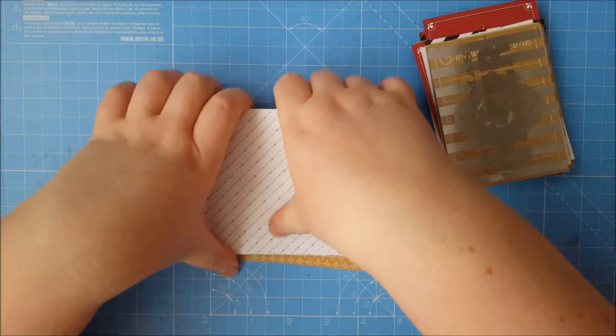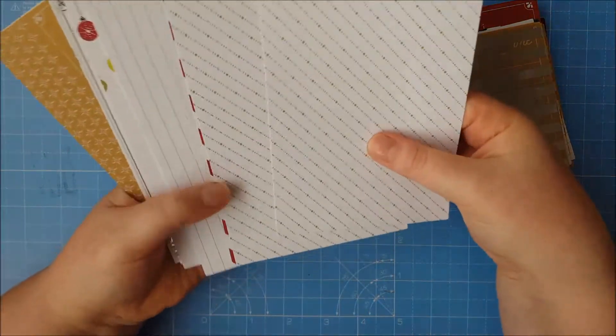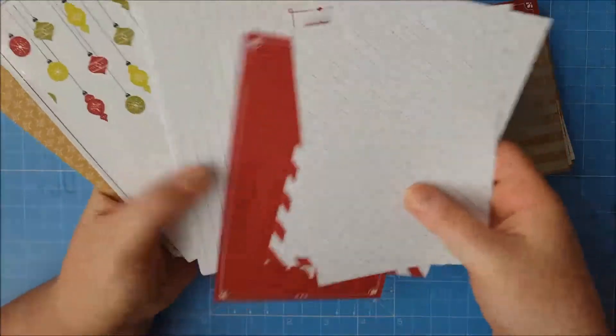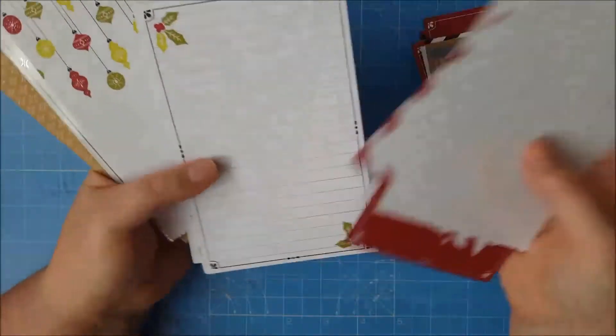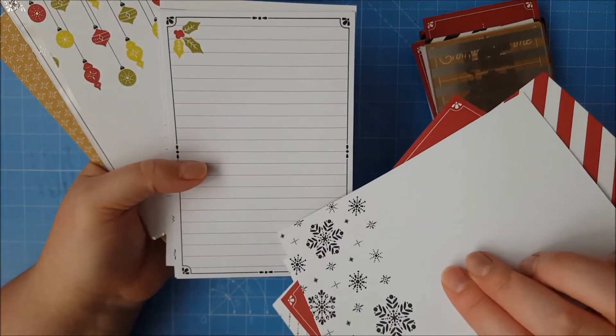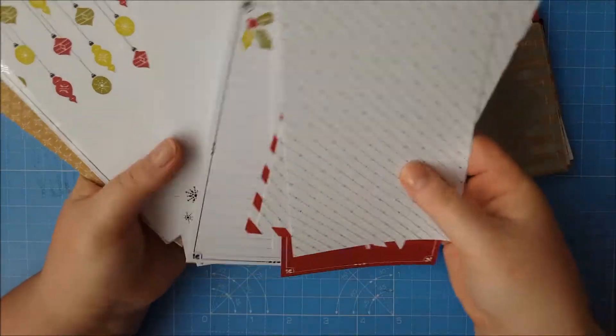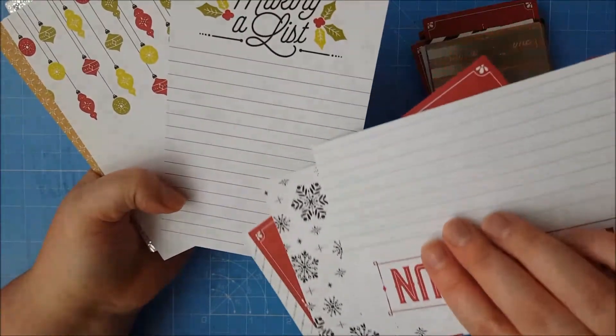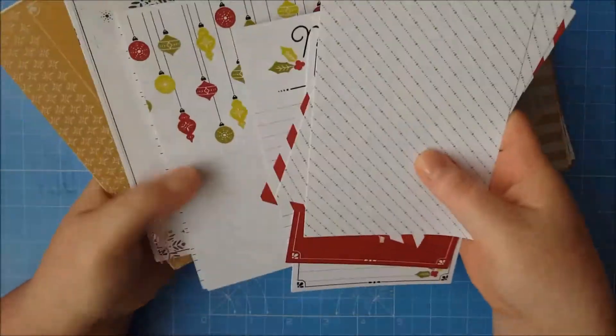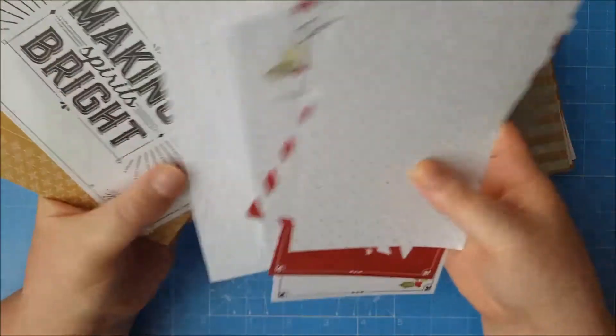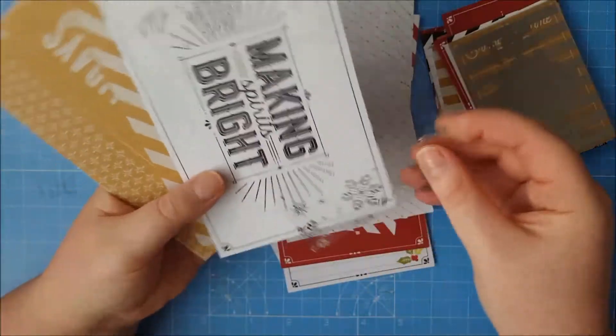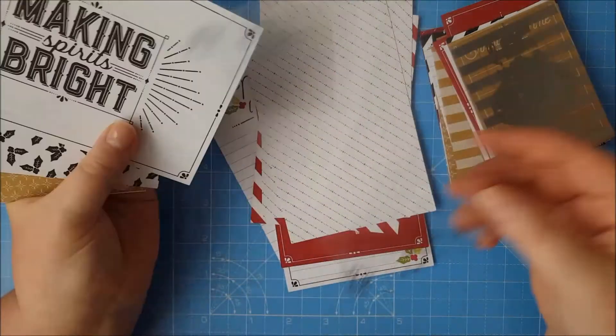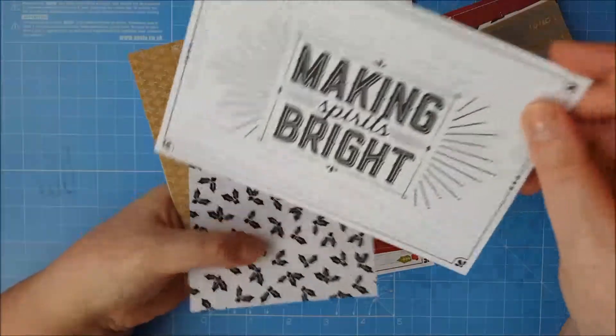And then you've got some bigger ones. So really fantastic for your scrapbooking or memory keeping, home decor. These would make really good recipe cards. If you'd like to make your Christmas recipe, your own little books. Making a list, I love that. And this one again acetate with some really nice snowflakes on there. That would be fantastic for a card as well.